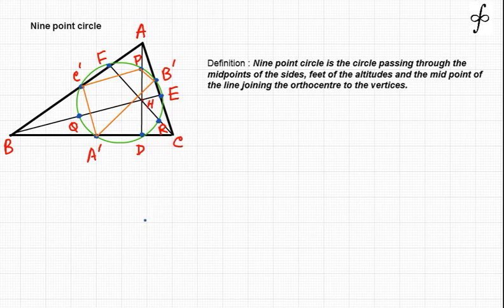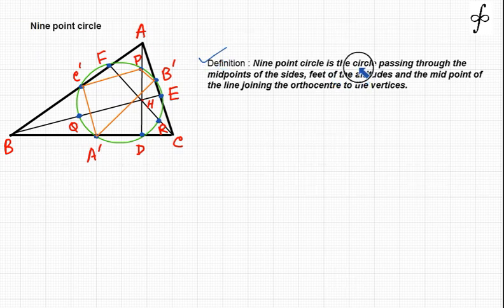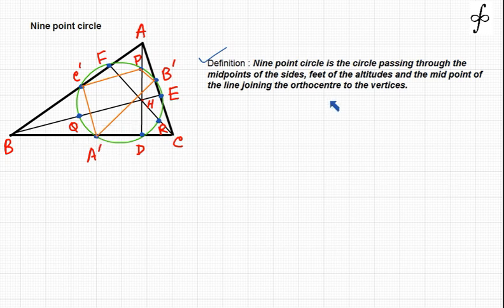Today we have an interesting concept helpful for students preparing for mathematics. This concept is called the nine-point circle. The nine-point circle is the circle passing through the midpoints of the sides of a triangle. We can see that for side AB the midpoint is C dash, for AC the midpoint is B dash, and for BC the midpoint is A dash.